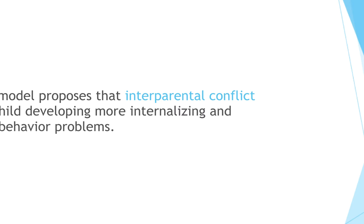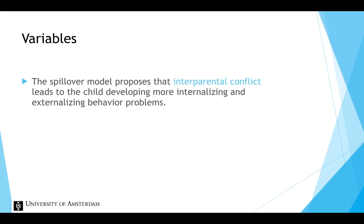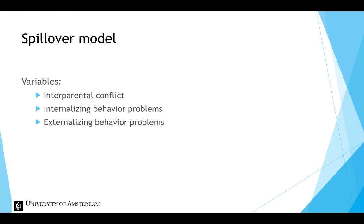Some parents might never get into conflict with their partner, whereas other parents might very often get into conflict with their partner. The second and third variables are internalizing and externalizing behavior problems. So far, we have identified three variables.